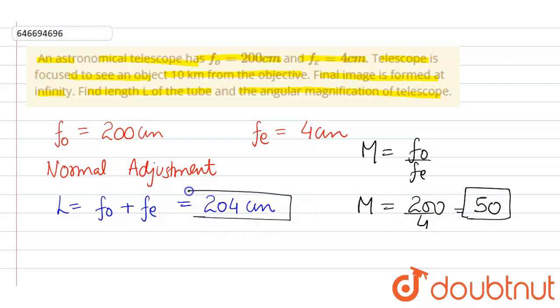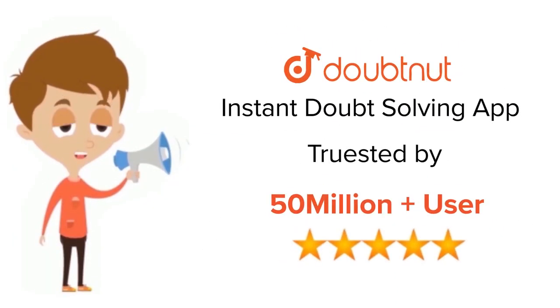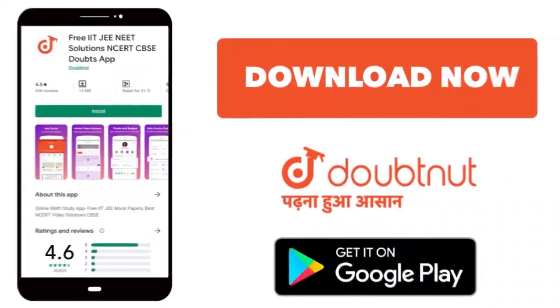So the answer of the question is magnifying power is 50 and the length of the tube is 204 centimeter. Thank you. For class 6-12, IIT and NEET level, trusted by more than five crore students, download Doubtnut app today.